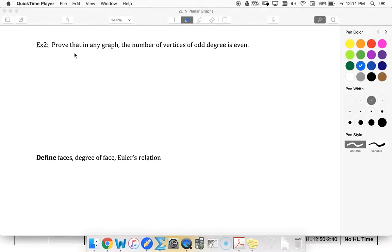All right, we're looking at this proof that in any graph the number of vertices of odd degree is even. So let's take our vertices and say that we have A vertices of even degree.